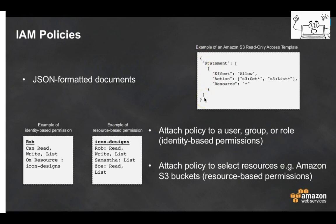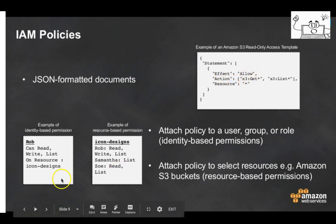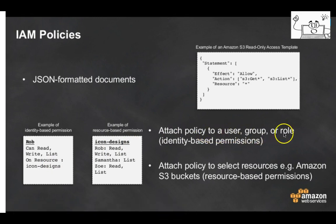IAM policies are written in JSON format. In the policy document you specify the statement: effect can be allow or deny, action specifies what action the user takes on the resources — for example S3 get and list — and resource with a star means access to all S3 buckets and all resources inside them. You can attach a policy to a user, group, or role, or attach a policy to selected resources such as an Amazon S3 bucket.